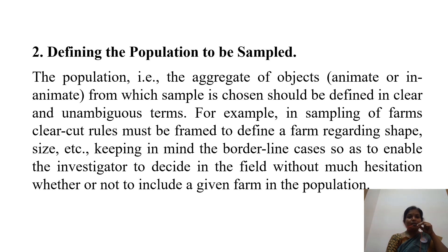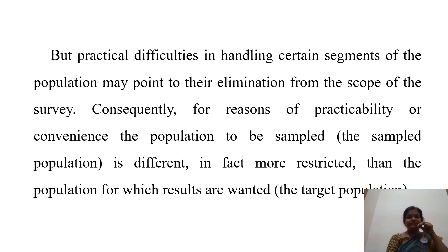Second, defining the population to be sampled. The population — that is, the aggregate of objectives, animate or inanimate — from which the sample is to be drawn must be clearly defined. For example, in sampling of agricultural fields, clear-cut rules must be defined regarding shape, size, and so on. The borderlines must be clearly drawn to enable the investigator to decide whether or not to include a particular unit in the population. Practical difficulties in handling certain segments of the population may lead to their exclusion from the scope of research. Consequently, for reasons of practicality or convenience, the sampled population may be more restrictive than the target population.